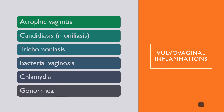Atrophic vaginitis occurs in postmenopausal women, whether from surgical, medical, or age-related causes. There is thinning of the epithelial lining of the vagina; abrasions are common during intercourse, and patients may have some bleeding due to decreased lubrication, making intercourse more painful. Uterine atrophy changes also typically occur.